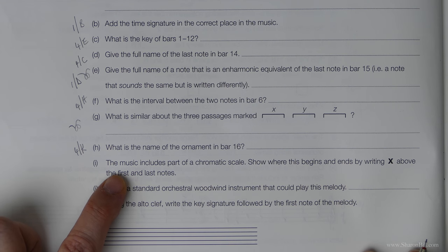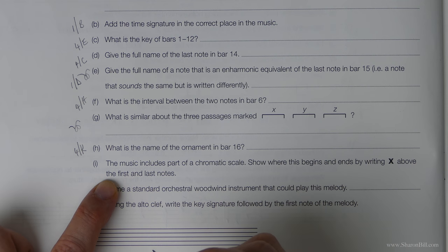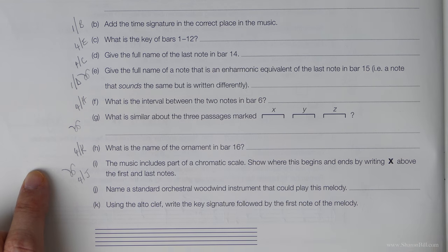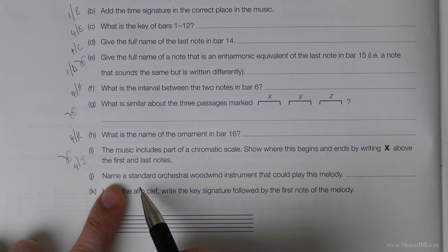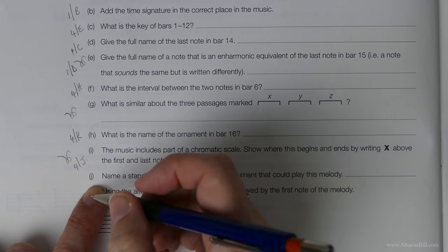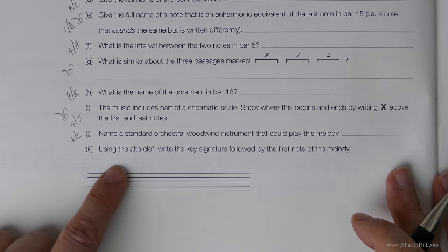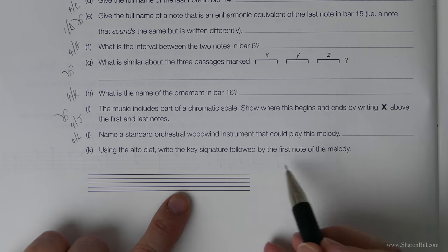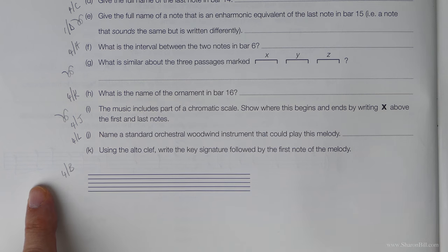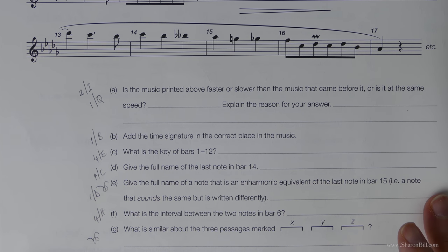Here we go, the next one. The music includes part of a chromatic scale. Show where this begins and ends by writing an X above the first and the last notes. So it's just a bit of observation really. But we refer to the chromatic scale in grade four, section J. Name a standard orchestral woodwind instrument that could play this melody. So you need to be careful that you're in the right pitch range for this clef. And we look at that in grade four, section L. And then the last question, using the alto clef, write the key signature and the first note of the melody. And we deal with alto clef in this grade. So that's grade four, section B. So now you know where to go and find the answers. Have a go at that and then come back to me and we'll work through this together.